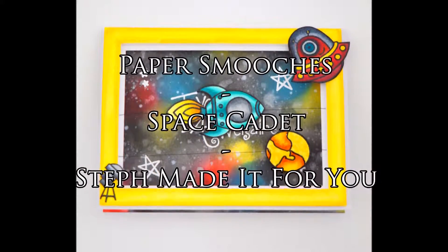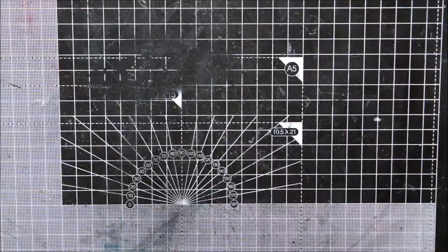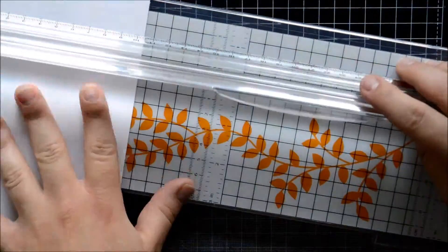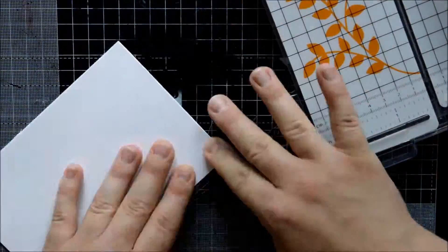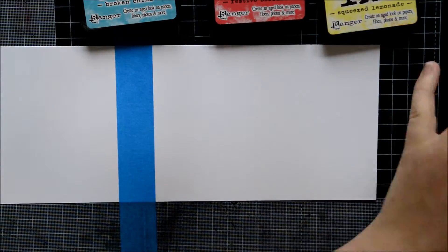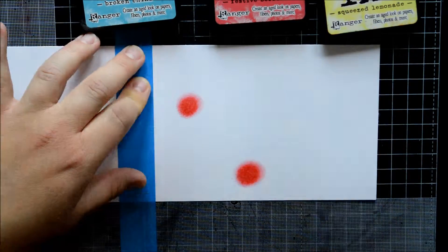Today I'm sharing a card I made using this Paper Smooches stamp set called Space Cadet. I've seen a few weeks, or maybe even a month ago, these kind of interactive cards where there's some element that moves round and round. They have another name, spinning cards I think.